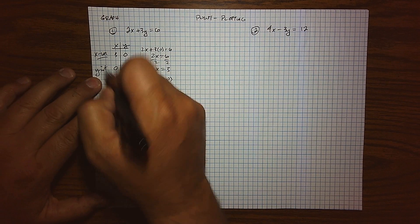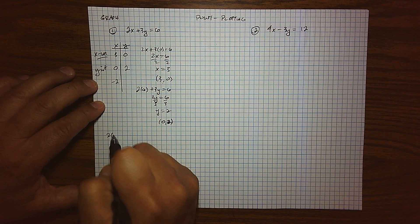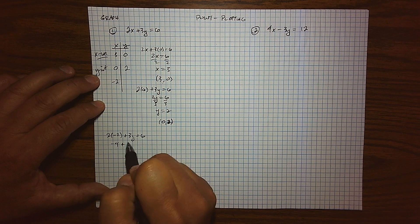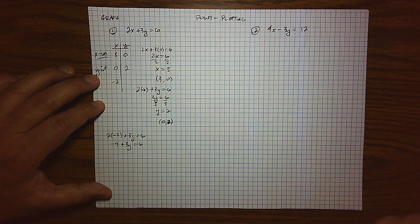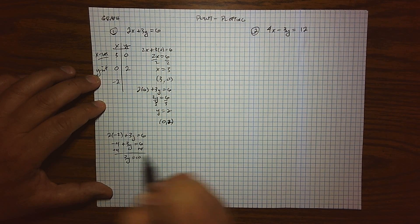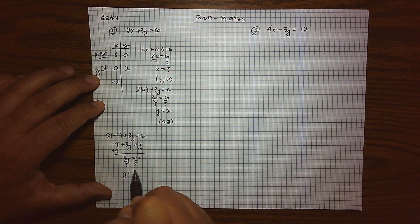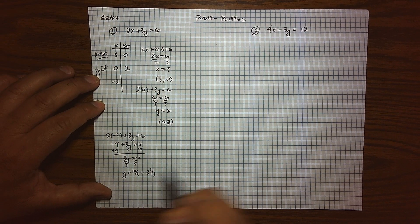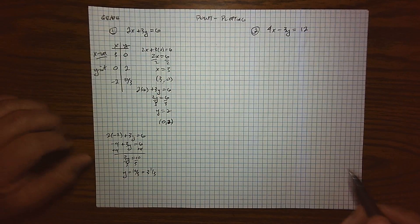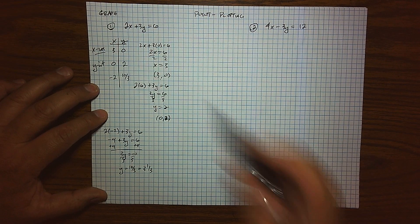So maybe I let x equal negative 2. By putting that in there, we get negative 4 plus 3y equals 6. We add 4 to both sides, we get 3y equals 10. Divide both sides by 3, and we get 10 thirds or 3 and a third. So again, it's not the greatest point, but as I mentioned, fractions are numbers too. And so that's our data point that we get. So plotting these three points...